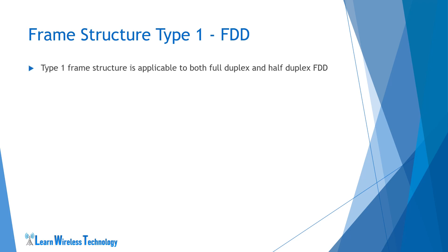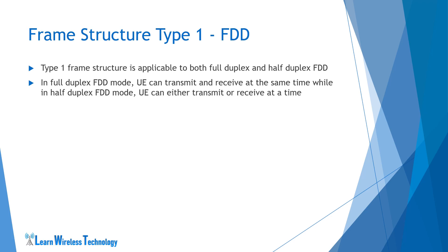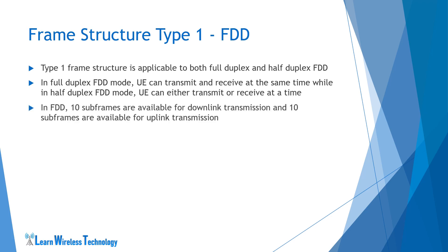The Type 1 frame structure is applicable to both full duplex and half duplex FDD. In full duplex FDD mode, the UE can transmit and receive at the same time, while in half duplex FDD mode, the UE can either transmit or receive at a time. In FDD mode, there are two different frequencies used — one for uplink and one for downlink transmission — with 10 subframes used in each direction. Both frequencies must be separated sufficiently to avoid interference, hence FDD requires a paired spectrum to operate. For Type 1 frame structure, the uplink and downlink transmissions are separated in the frequency domain.